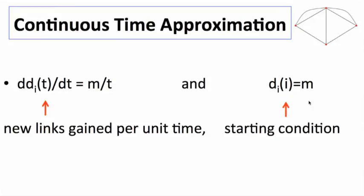What do we end up with in terms of the basic structure here? First of all, the starting condition: when a node i is born, its degree at time i is going to be m. So when it first is born, it forms its m new links.